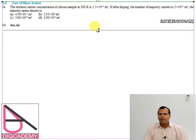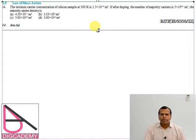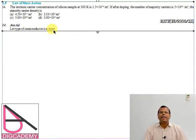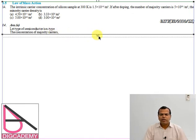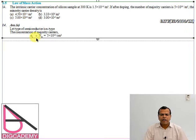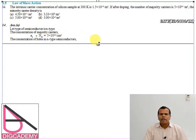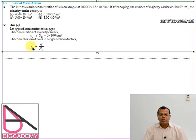Here the type of charge carrier is not given, so we will be assuming that the material is an N-type semiconductor. The majority carrier concentration given is the donor impurity concentration, Nd = 5 × 10^20 per centimeter cube. The minority carrier concentration for an N-type semiconductor is given by the law of mass action expression.